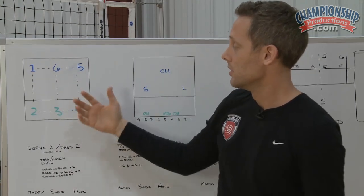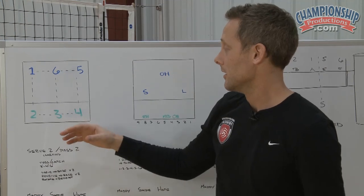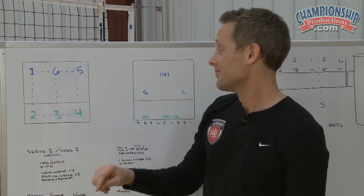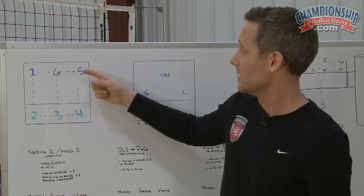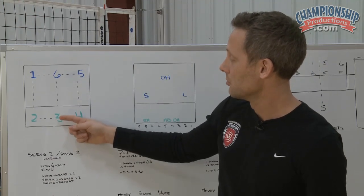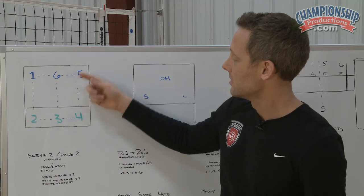Where this really comes into play is in a few serve receive options. So later you'll see in rotation three, when a setter is here in left back and an outside is here in middle front, we exchange these two players.